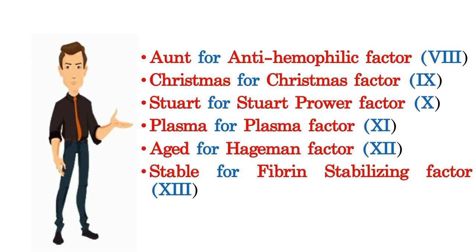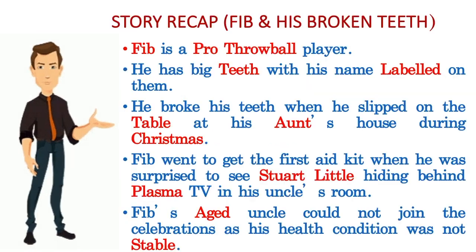Stuart is the clue for Stuart Prower factor, the tenth one. We will pick the eleventh factor straight from the story — plasma factor is the eleventh one. Aged is the clue for Hageman factor, the twelfth one. Stable is for the last factor, which is fibrin stabilizing factor, the thirteenth one.